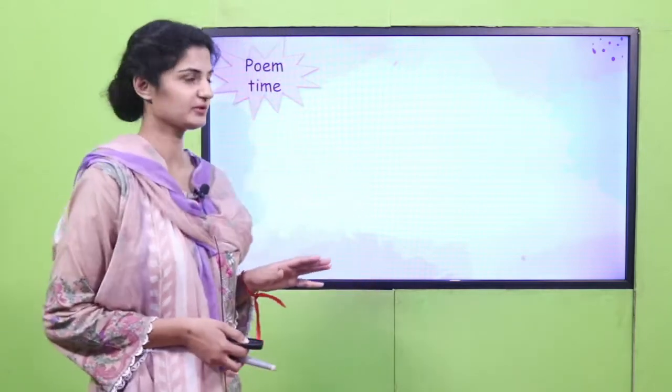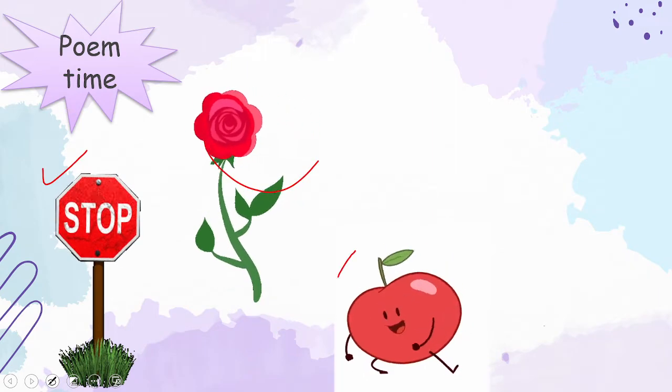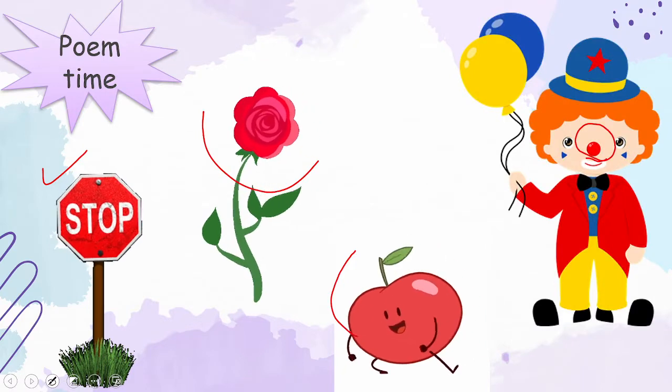Now it's poem time. First you are going to hear me sing the lines, and then you are going to try to repeat after me. Red is a stop sign. Red is a rose. Red is an apple and a funny clown nose. Hopefully your teacher has given you a piece of play-doh and you are going to make a clown nose with it. Let's sing the poem again — watch my actions and repeat after me. Red is a stop sign. Red is a rose. Red is an apple and a funny clown nose. This is a very short poem — I hope you can easily memorize it.